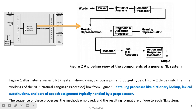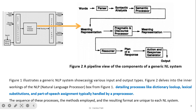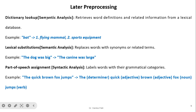This is the core block — the natural language processor — expanded here in a second figure, which is a pipeline view of the components of a generic NLP system. Figure 1 illustrates a generic NLP system showcasing various input and output types. Figure 2 delves into the inner workings of the NLP box from Figure 1, detailing processes like dictionary lookup, lexical substitution, and part-of-speech assignment. The sequence of processes, the methods employed, and the resulting format are unique to each NLP system — that is why NLP systems are not similar in nature; the scope, input, and output differ.